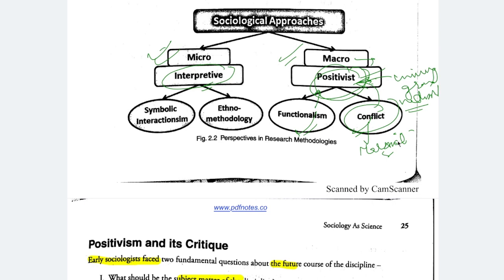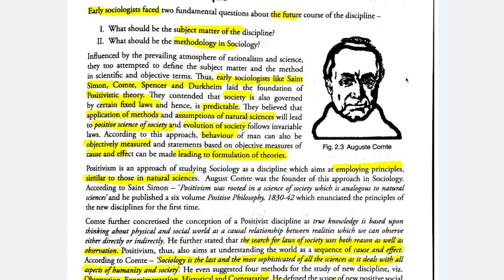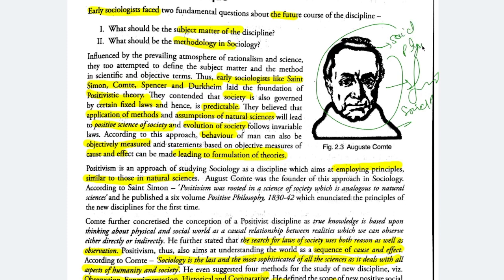Now let's discuss positivism and its critique. Auguste Comte is the founding father of sociology. He was so inspired by natural sciences that he initially named the discipline social physics, which gradually developed into sociology. The early sociologists — Saint-Simon, Comte, Spencer, Durkheim — laid the foundation of positivistic theory. Positivistic theory aligns research with natural science. They contended that society is governed by certain fixed laws and society is predictable.